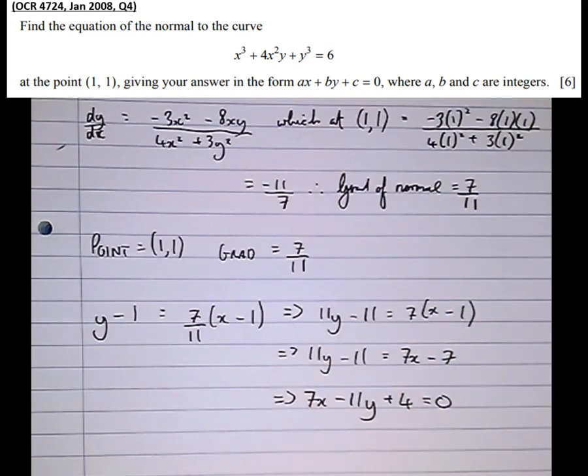Now any acceptable answer would be an integer multiple of this. So you can have -7x + 11y - 4 = 0. You could have the same equation doubled, any integer multiple is an acceptable answer.